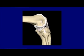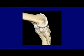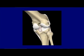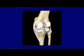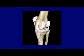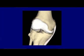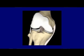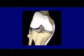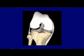Here's the lateral collateral ligament and the cruciate ligaments — the anterior and posterior cruciate ligaments. We have the medial collateral ligament, the lateral collateral ligament, and the anterior and posterior cruciate ligaments all moving.